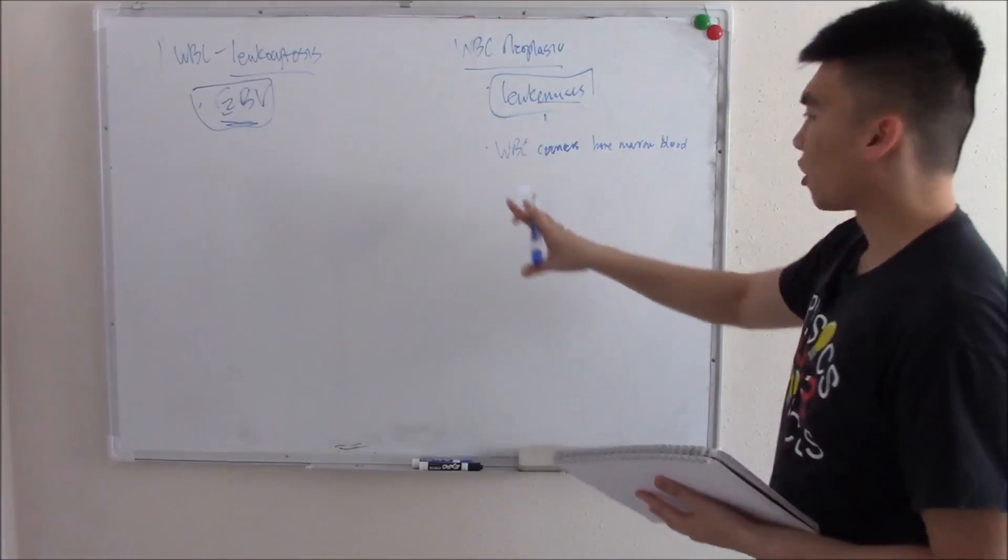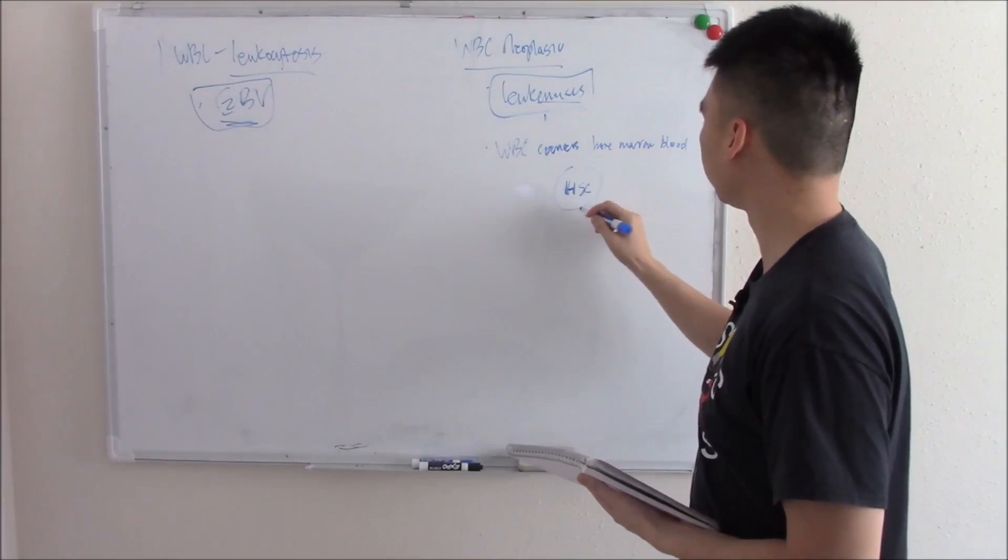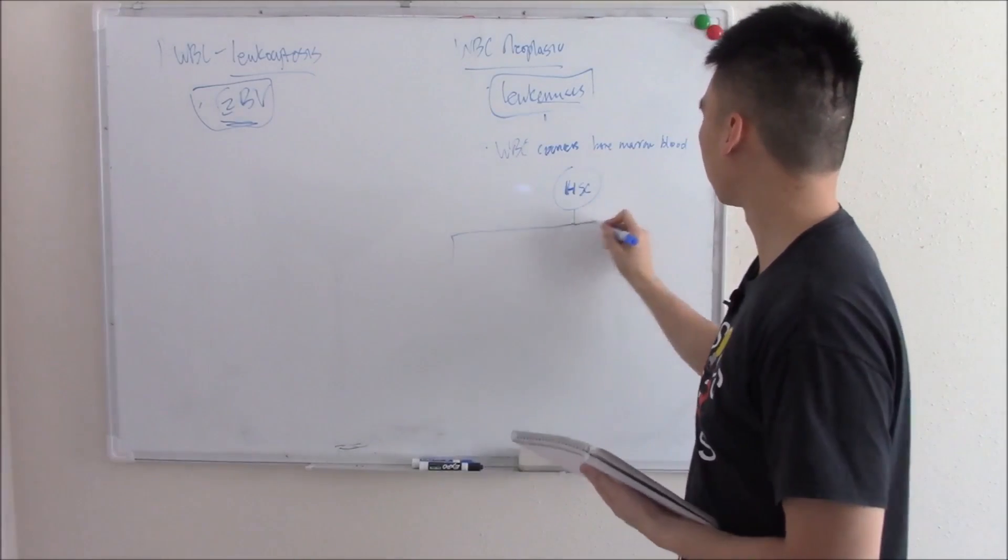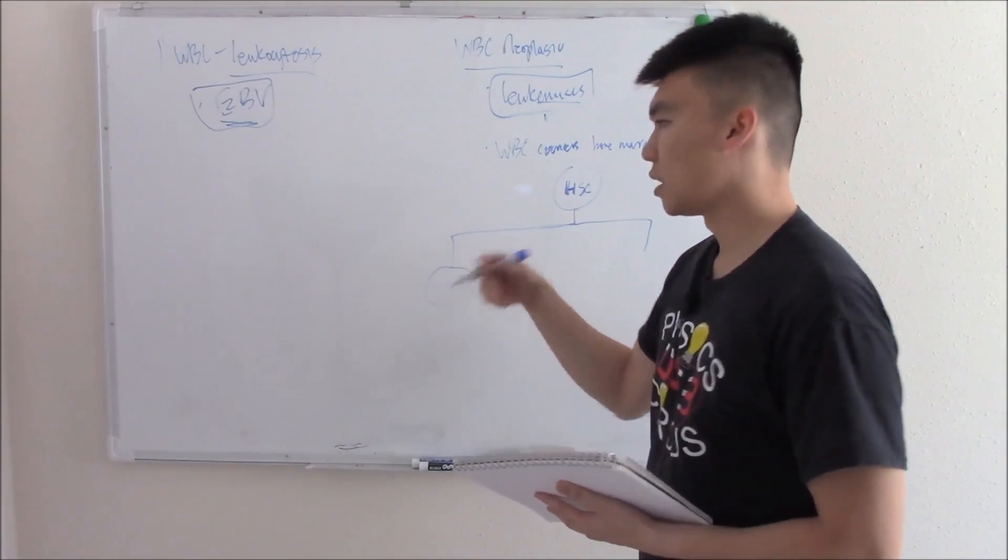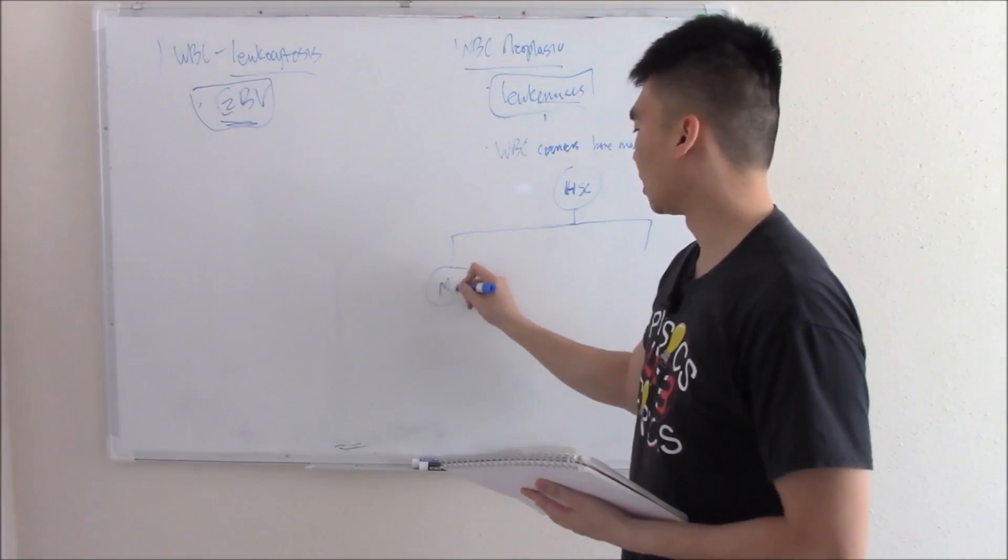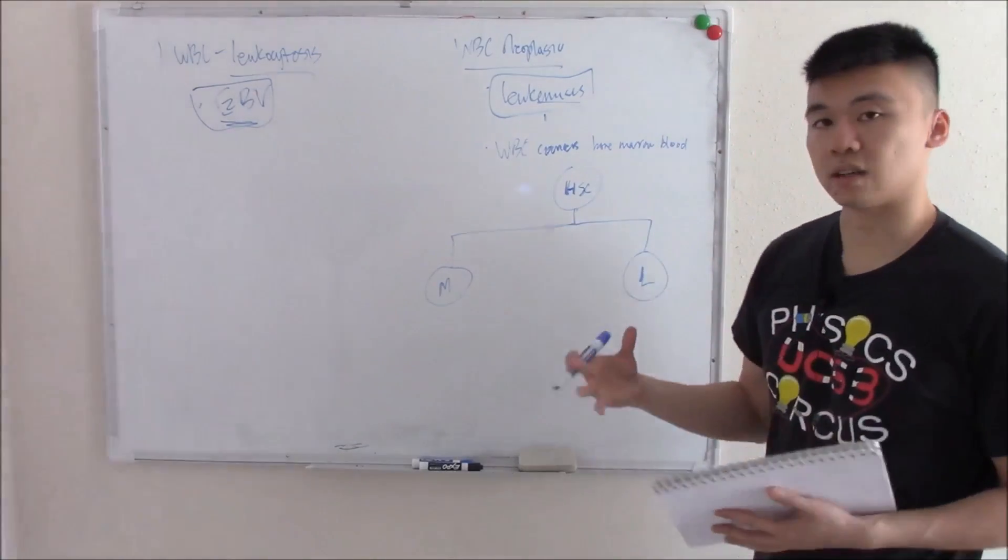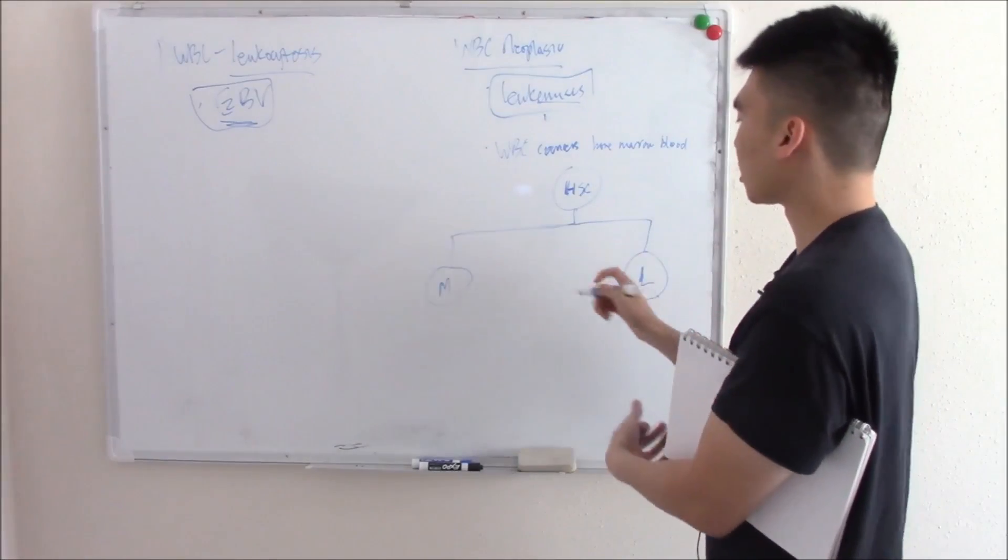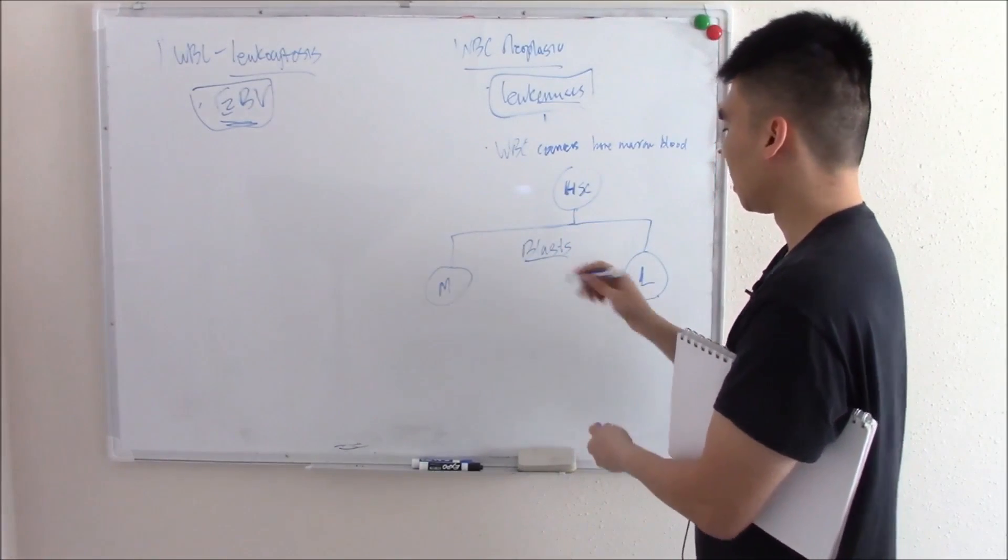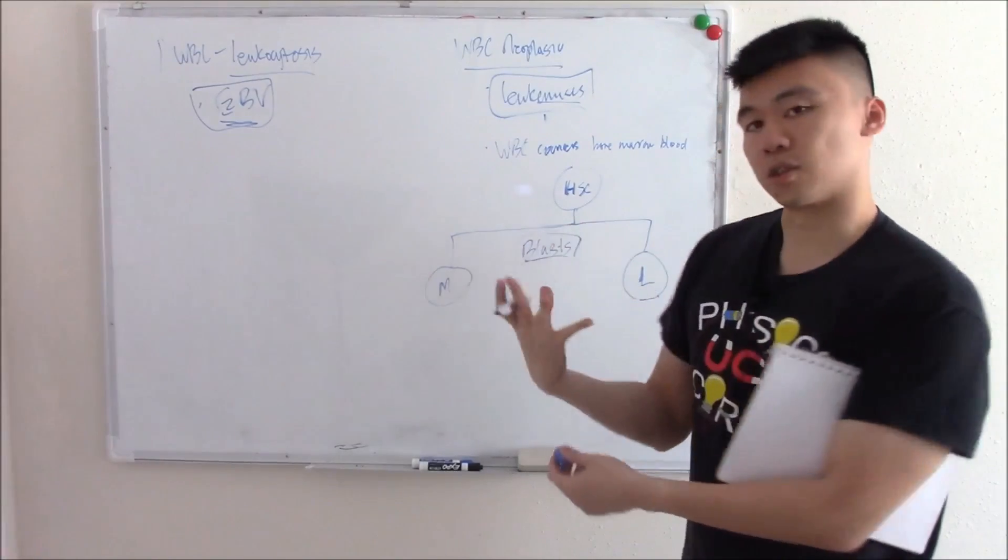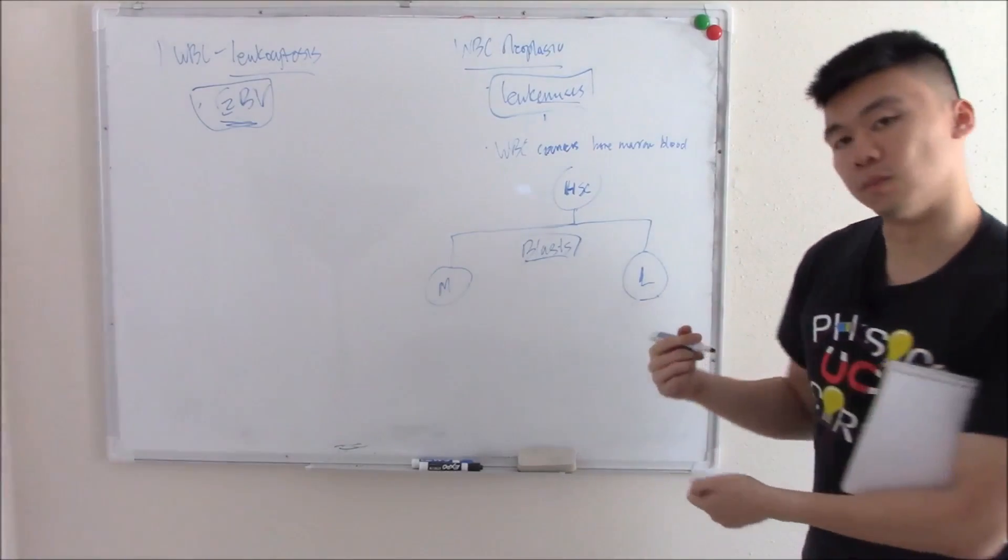Let's do a recap. How do we make white blood cells? We have our hematopoietic stem cell with two pathways. We have your common myeloid progenitor, M for myeloid, and one that goes to lymphoid progenitor, L for lymphoid. These immature progenitor cells we call blasts. The term blast just means immature cell. So we have myeloblasts and lymphoblasts.